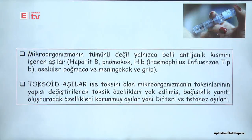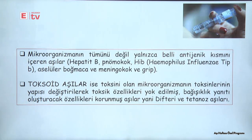Ölü aşılar ise mikroorganizmanın tümünü değil, sadece antijenik yapısını kullanan aşılardır; Hepatit B'de olduğu gibi, Hib dediğimiz hemofilus influenza B'de olduğu gibi. Toksoidler ise bir mikroorganizmadaki toksinlerin ortadan kaldırılmasından sonra geriye kalan, toksik etkileri yok edilmiş kısmın kullanılmasıdır; difteri ve tetanoz aşılarında olduğu gibi.